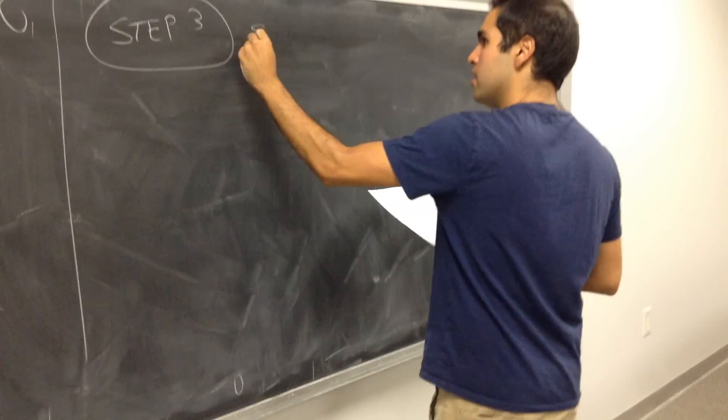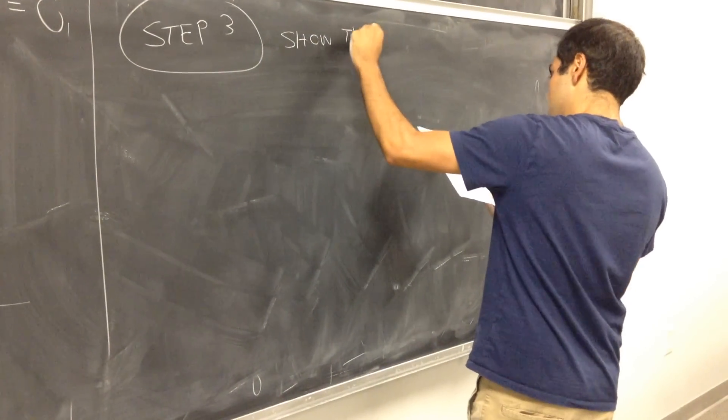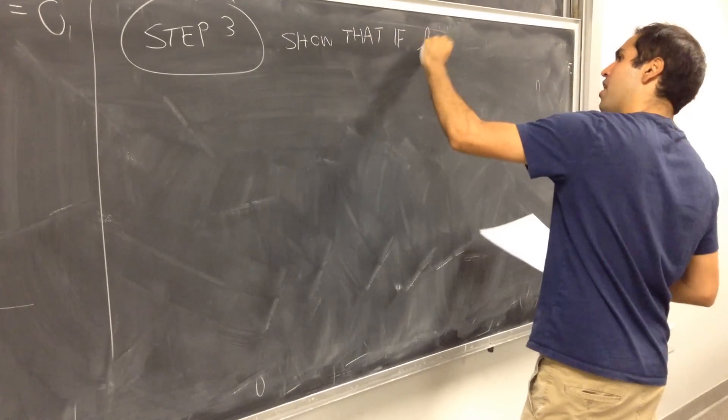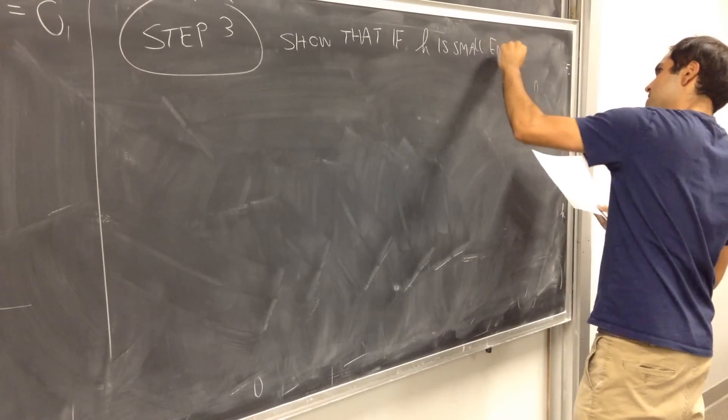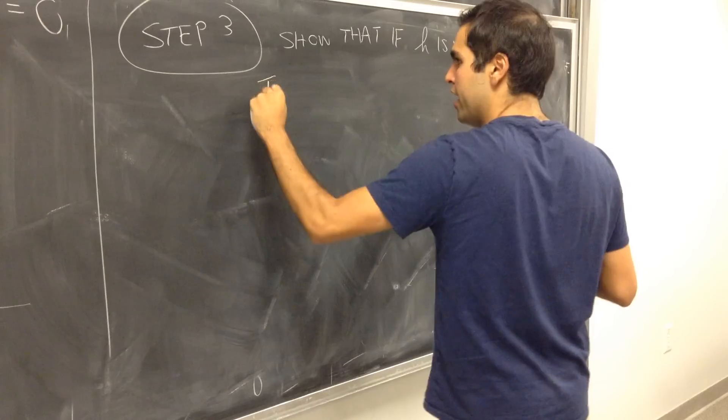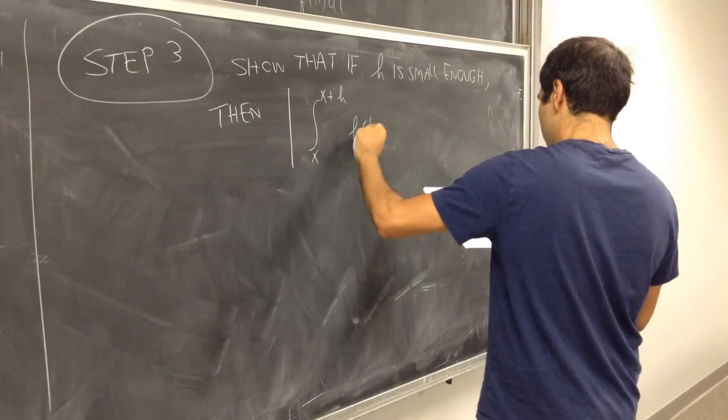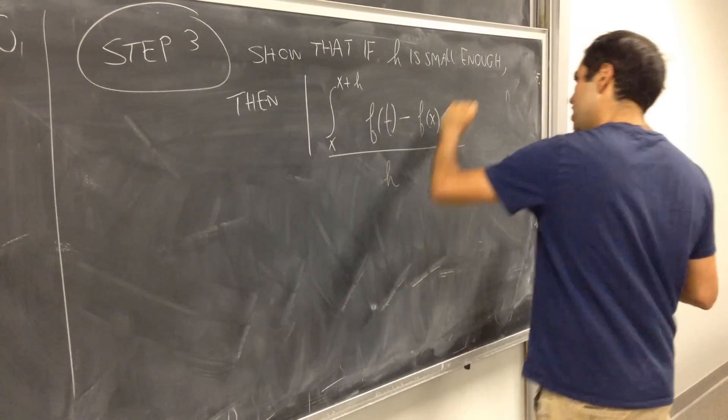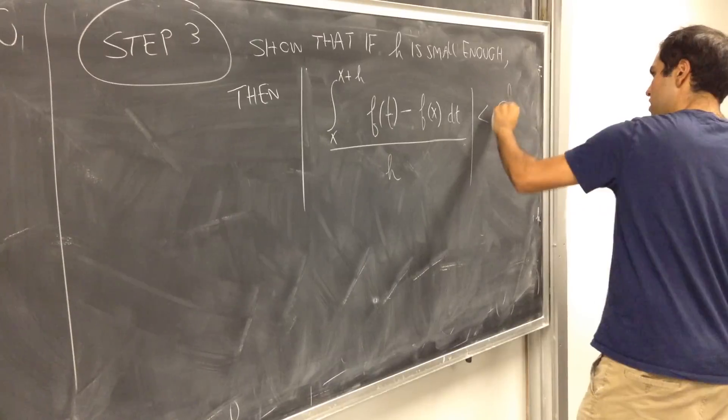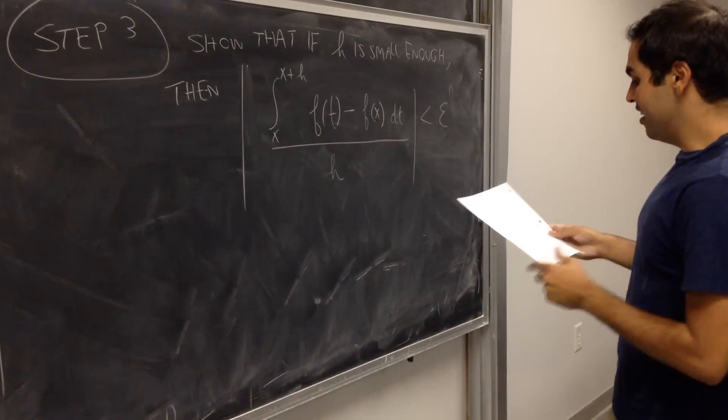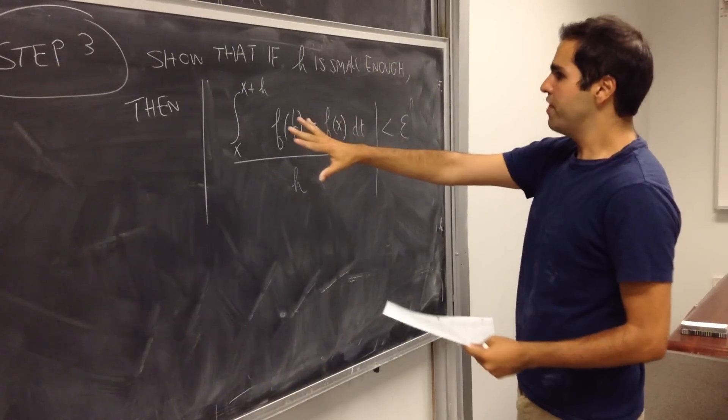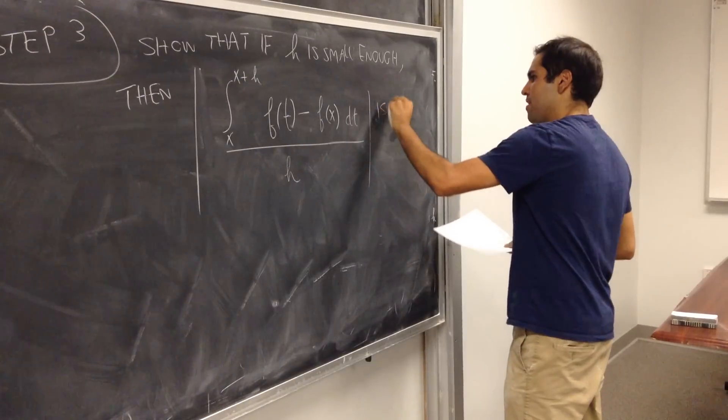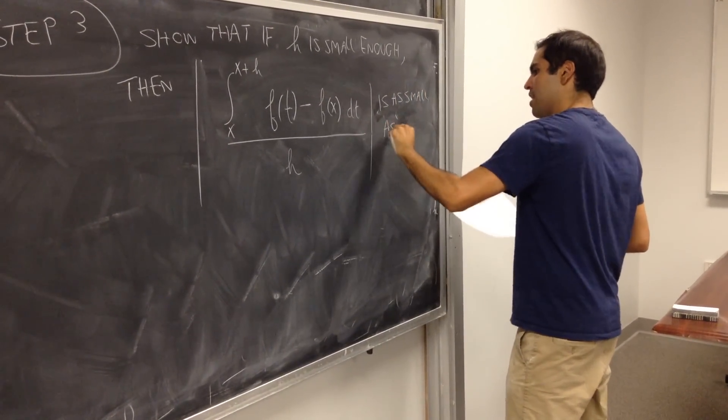So what do we want? Epsilon-delta. Namely, what we want to show that, show that if h is small enough, then this thing, absolute value of this junk, integral from x to x plus h f of t minus f of x dt over h, is as small as you want.